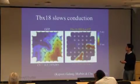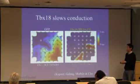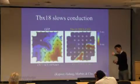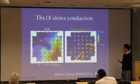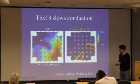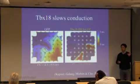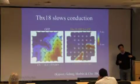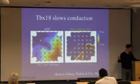On a multi-electrode array recording, control conduction velocity is about 14 centimeters per second — that's how fast the electrical wavefront moves. When we add TBX18, it slows down by more than fourfold. In other words, the slow conduction velocity seen in the native SA node could be mimicked by adding TBX18 in vitro.